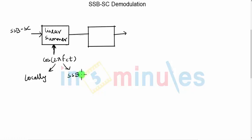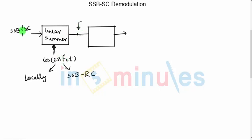If the incoming signal is of the form SSB RC, where RC stands for reduced carrier, and if there is no carrier in the incoming signal, then we generate the carrier locally through a local oscillator. So what is the purpose of using summer here? When you add the carrier to SSB SC, please remember we are not multiplying in this case, we are adding the carrier signal to the incoming SSB signal.